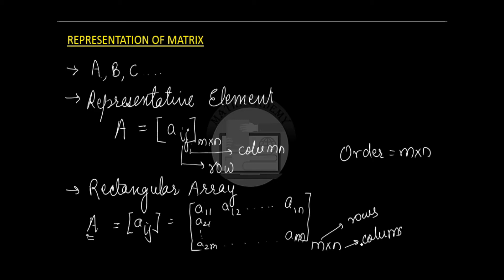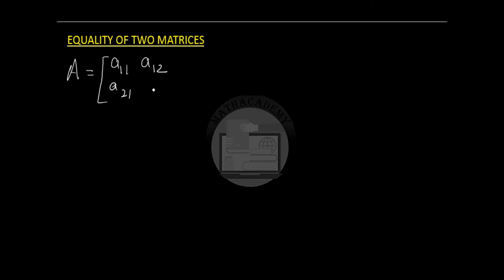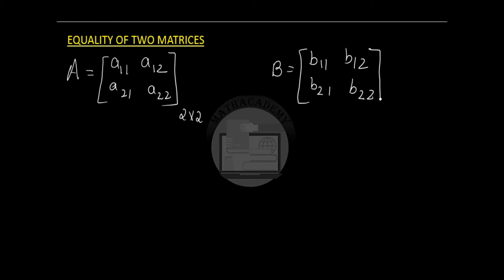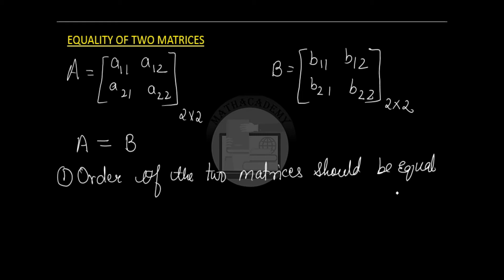I hope representation of matrix is clear to everyone. Now let us see what do we mean by equality of two matrices. If there is a matrix A, a 2 by 2 matrix, so it will have two rows and two columns. This is a 2 by 2 matrix and we have another matrix B. So for matrix A to be equal to matrix B, the first condition is that the order of the two matrices should be equal. So if matrix A is M cross N, then matrix B should also have the same order — M rows and N columns — same as matrix A.